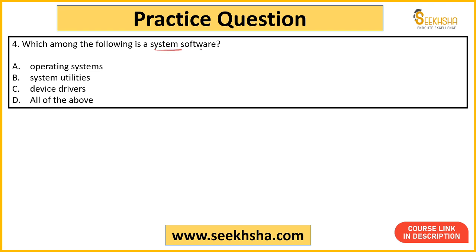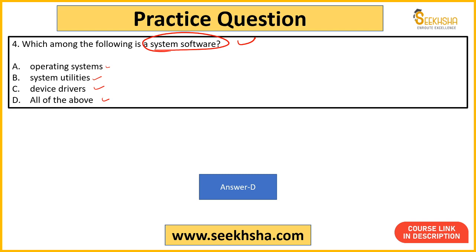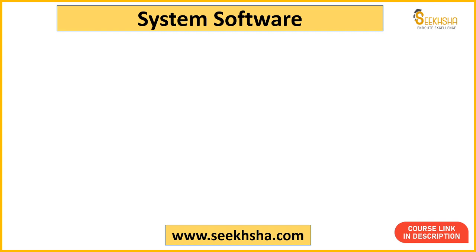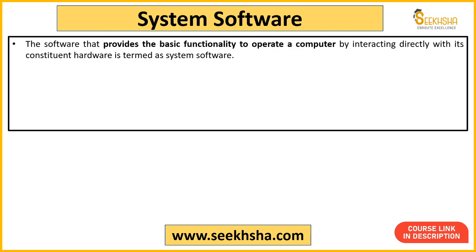Next question: which among the following is a system software? Option A: Operating System, B: System Utilities, C: Device Drivers, D: All of the above. The answer is option D — all of the above. These three are examples of your system software. System software basically handles your computer's basic functionality.